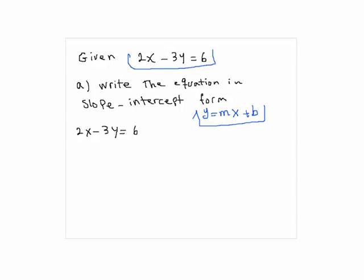we can subtract 2x from each side of the equation. So you would get minus 3y equals minus 2x plus 6. So we are one step closer to have our equation in this form. Now we need to divide each term by negative 3 so we can isolate the y.